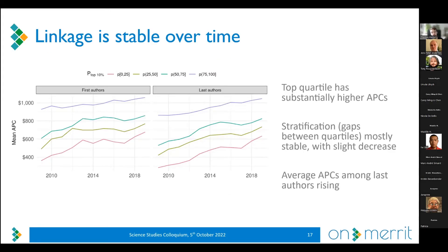Looking at development over time, we split the institutional resourcing proxy into four quartiles. The top quartile — the top 25% of institutions — clearly shows stratification: researchers from top institutions publish in journals with higher APCs. The stratification roughly stays the same over the observed period; the distances between quartiles are almost unchanged, though there may be a slight decreasing tendency. Notably, for last authors, average APCs are rising.